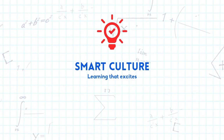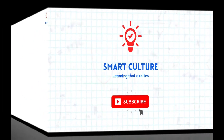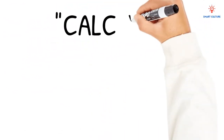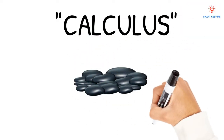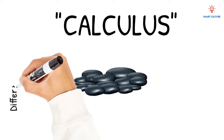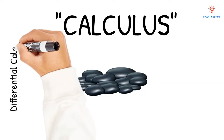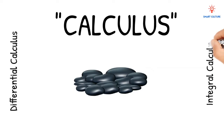The word calculus actually comes from the Latin meaning 'small stone,' because it is like understanding something by looking at small, tiny pieces. Differential calculus cuts something into small pieces to determine how it changes, while integral calculus joins or integrates the small pieces together to find how much there is.